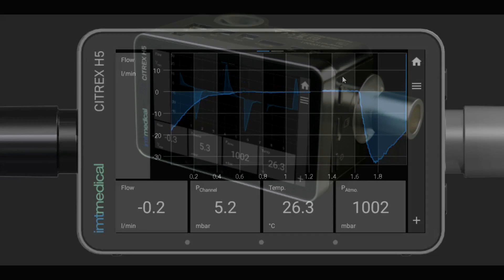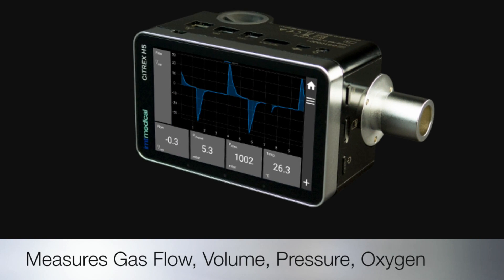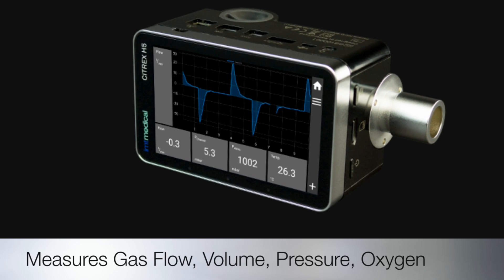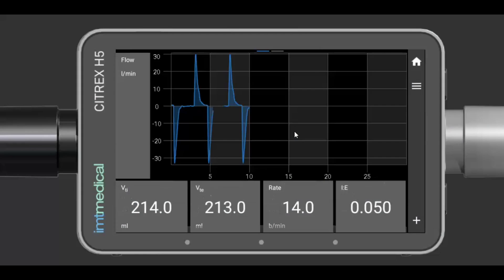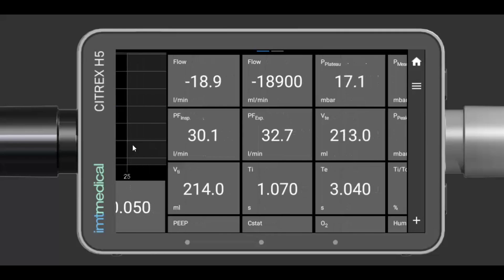It's portable, accurate, and enables users to individually configure their measuring screens. The new Citrex H5 is designed to meet a wide variety of day-to-day applications.